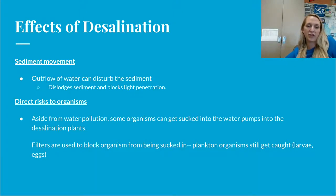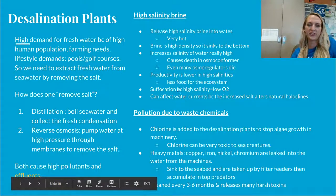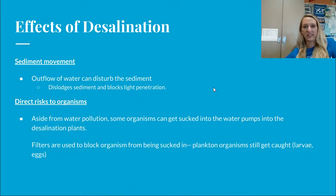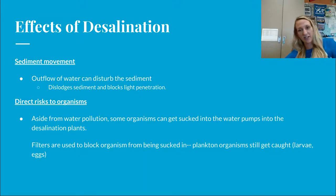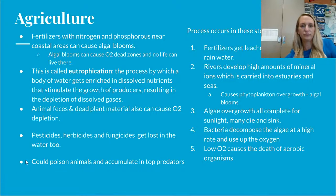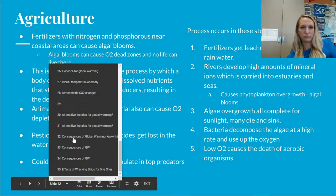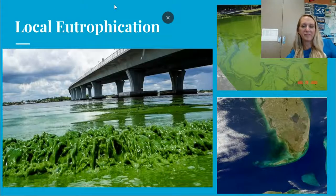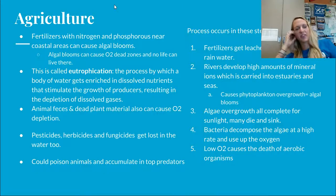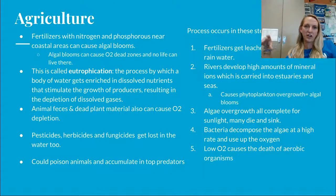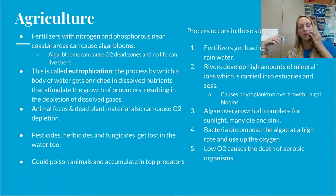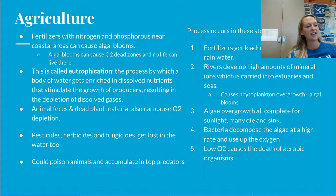There's also a direct risk to organisms: some get sucked into the water pumps going into the desalination plants. Filters are used to stop organisms from getting sucked in; however, planktonic organisms, larvae, and eggs will still get caught. Fertilizers containing nitrogen and phosphorus in coastal areas can cause algal blooms because they provide excess nutrients. Algae need phosphorus and nitrogen for protein synthesis, making amino acids and nitrogenous bases, and for making nucleic acids to produce DNA.